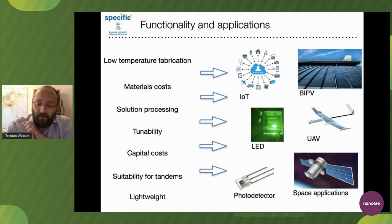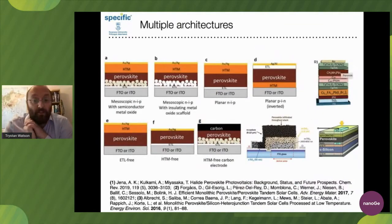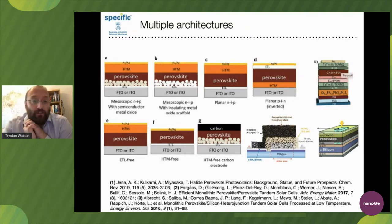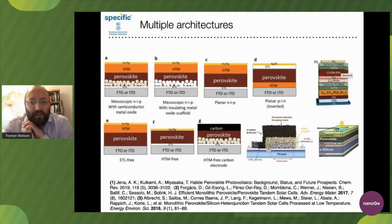Perovskite is an incredibly collaboratively driven field. There's a lot of choice, which most of us enjoy, though on a wet Monday morning when your team is trying to decide whether you've chosen the right architecture, it can be tricky. It evolved from mesoscopic structures - you can see top left A and B - and then the community realized we could get great performances from planar devices, shown in C and D, without the mesoporous structure.